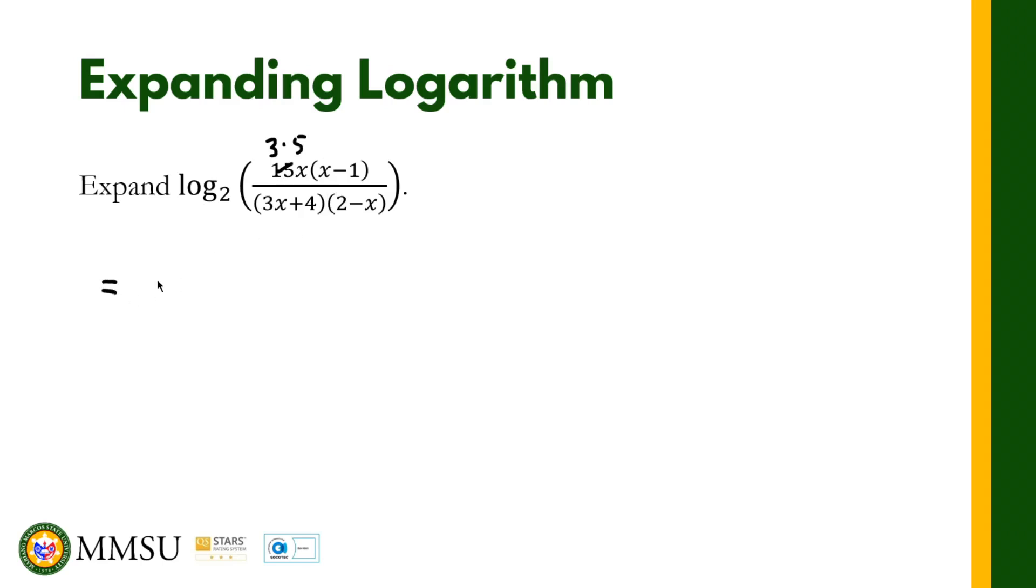Using the quotient rule we have logarithm of the numerator: 3 times 5 times x times x minus 1 in base 2, and then minus the denominator. Logarithm of the denominator: we have 3x plus 4 and 2 minus x.